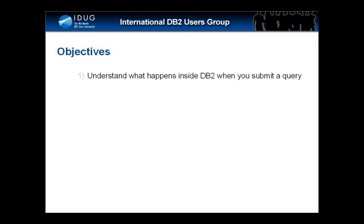Let's for a moment think of a Java application that wants to find out all the salesmen in an organization. You would run a query like: SELECT * FROM employee WHERE role equals 'sales'. What happens from the moment you submit that query until you get a response back from DB2? Let's have a look.